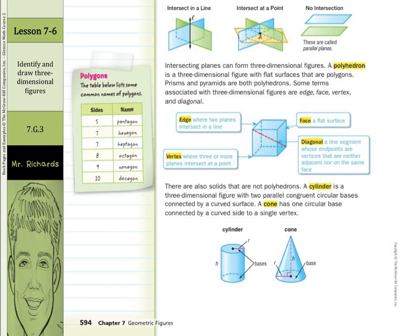There are also solids that are not polyhedrons. A cylinder is a three-dimensional figure with two parallel congruent circular bases, as you can see, connected with a curved surface. A cone has one circular base connected by a curved side to a single vertex. Now, here's a little nice handy list of common names of polygons. Five, pentagon, seven, hexagon, or heptagon. Wait a minute, there's a mistake there. Seven's not hexagon. Let's fix that. Six is hexagon. Seven would be heptagon. Eight, octagon. Nine, nonagons. And ten are decagons.